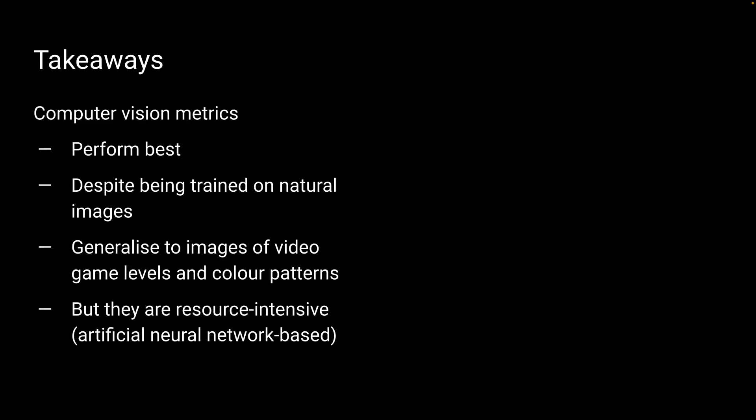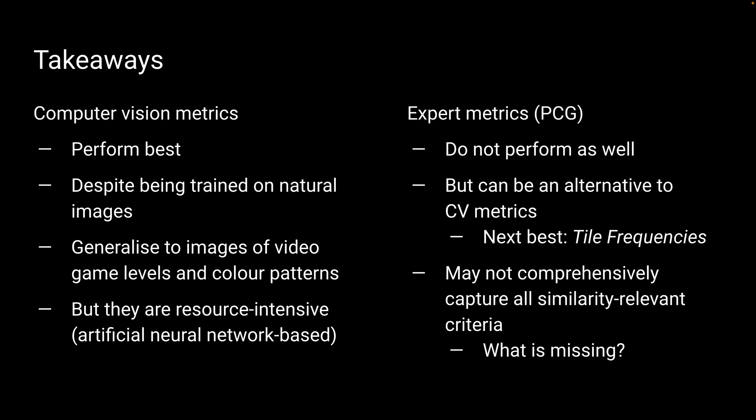The takeaway from this first study: computer vision metrics perform best despite being trained on natural images. That is to say, they generalize to images of video game levels and to color patterns. But they are also very resource intensive because they are based on artificial neural networks. So expert metrics from the PCG literature do not perform as well, but can be an alternative to computer vision metrics. The next best, based on our results, is tile frequencies.